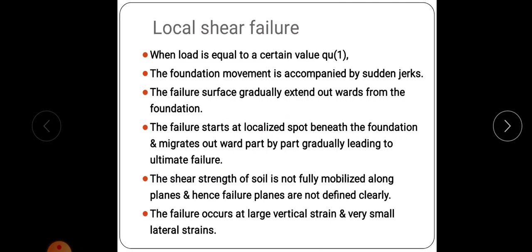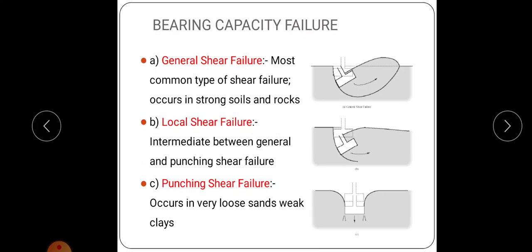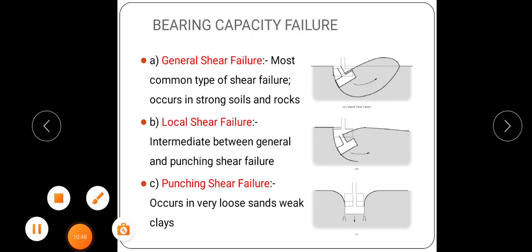To summarize the different types of soil failure: general shear failure occurs for sand with relative density greater than 70% and in stiff clays; local shear failure occurs for sand with relative density between 35 to 70% and in soft clays; punching shear failure occurs for sand with relative density less than 35%. Please read the textbook and contact me if you have any doubts. Thank you.